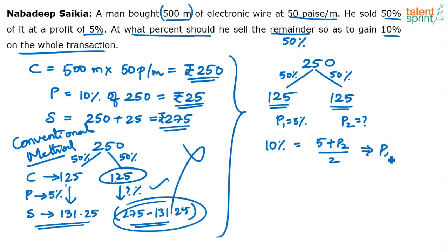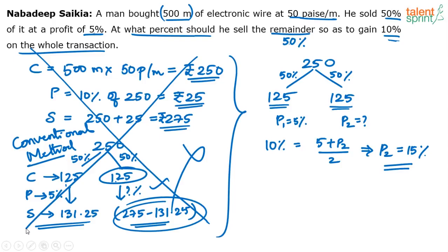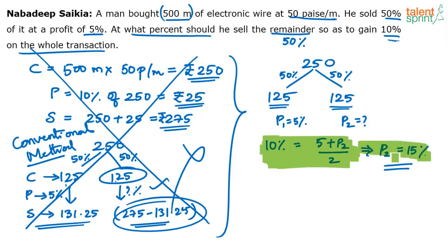So what is P2? P2 will be 15. You need not put pen on paper for this calculation. If one value is 5, what should the other value be so that the average becomes 10? It should be 15 — because 5 plus 15 is 20, and 20 divided by 2 is 10. That's what we want. So 15% is the answer. There's no need to do all that drama in the exam — simply apply the average.